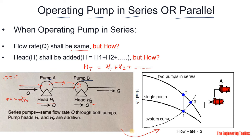Now let's understand this with a graph from the Engineering Toolbox. The curve is between head versus flow rate, and this is your system curve. When operating only one pump (pump A), this is the condition — a certain flow rate and head. When operating two pumps in series, the flow rate remains constant but the head is additive: H1 plus H2.